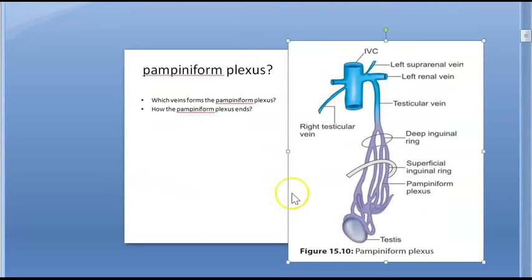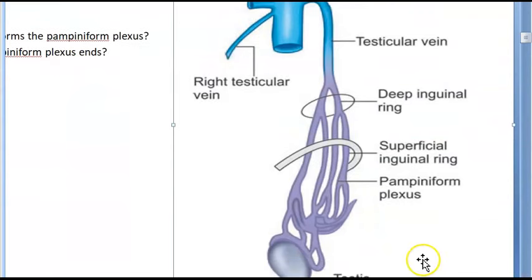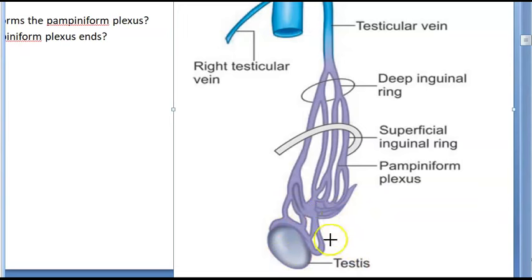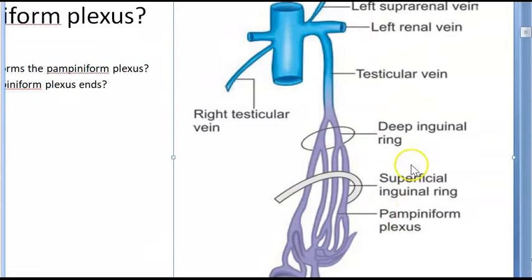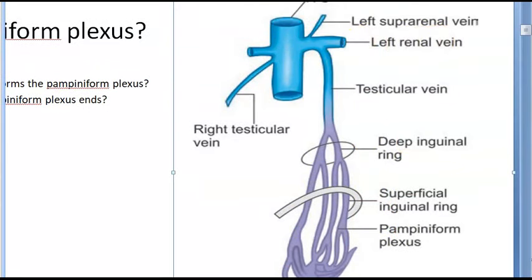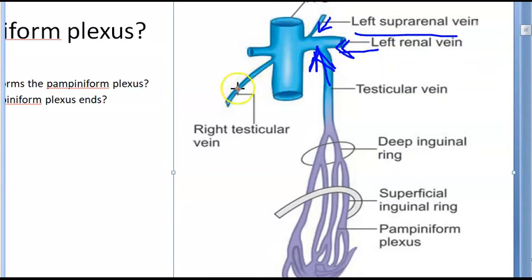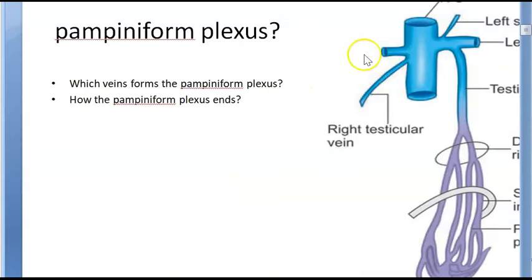Let's look at this image to understand the pampiniform plexus. We're showing the left side anatomy because left side is more common. You can see the testis and the veins draining into the pampiniform plexus, which then drains into the testicular vein. The testicular vein drains into the left renal vein. There is also a left suprarenal vein. The kidney, testis, and suprarenal structures all drain here, and finally they drain into the inferior vena cava.